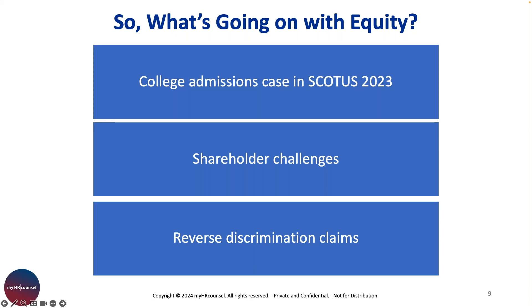Another issue coming up more recently is so-called reverse discrimination claims: where a workplace DEI program's equity portion is challenged because some people are favored based on their race and sex over others. This gets into a gray area, and it also depends a lot on where you're located. That's a quick summary of the legal landscape around the equity portion of DEI programs.